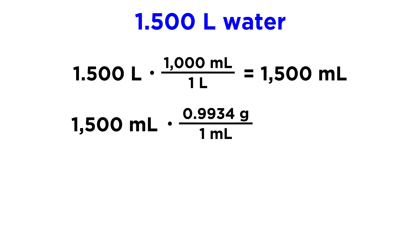Now that we have milliliters, we can use our density: 1500 milliliters times 0.9934 grams per milliliter, and that is going to give us a mass of 1490 grams. So that is the mass of water contained in that volume of water specifically at this temperature, 37 degrees Celsius. If we had a different temperature, things might be slightly different.